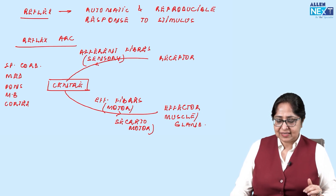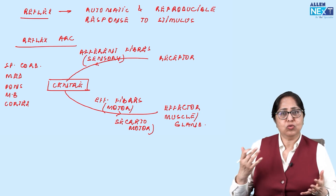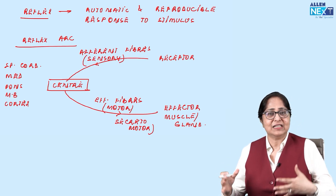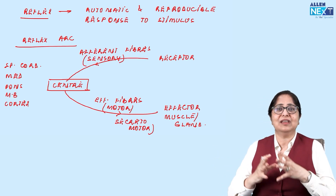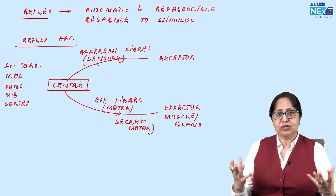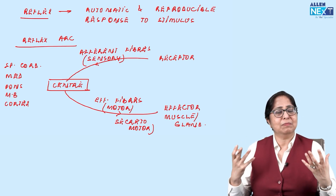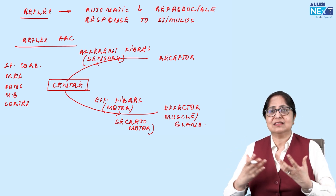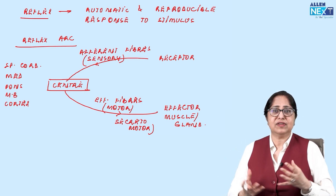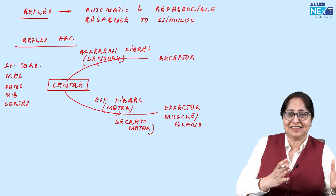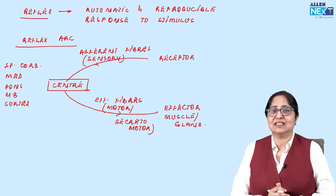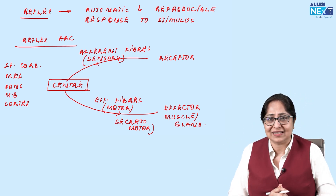Reflexes can be monosynaptic, bisynaptic, or polysynaptic depending upon the number of synapses. They can be spinal reflexes, medullary reflexes, midbrain reflexes, or cortical reflexes depending upon what is the center. So there are different ways of classifying reflexes.